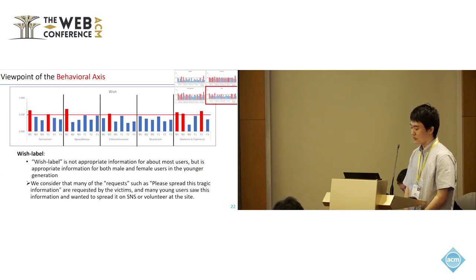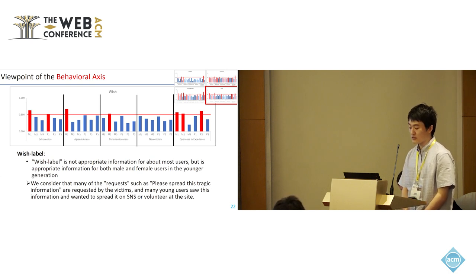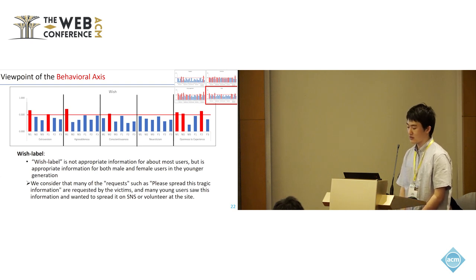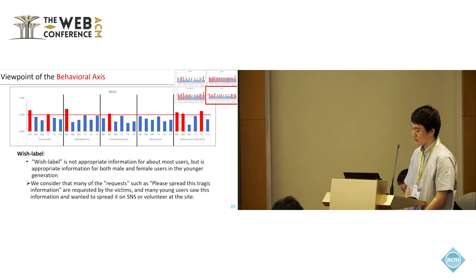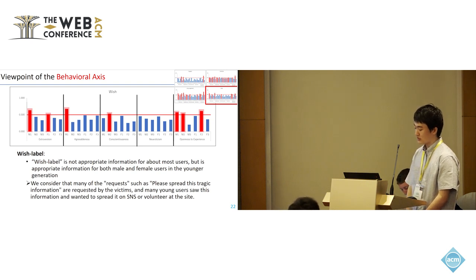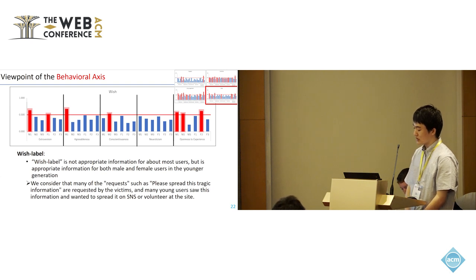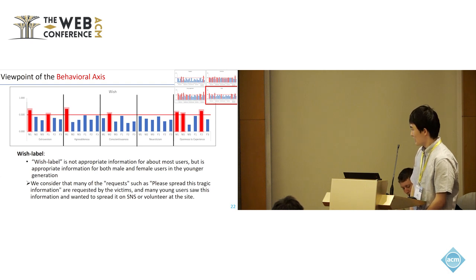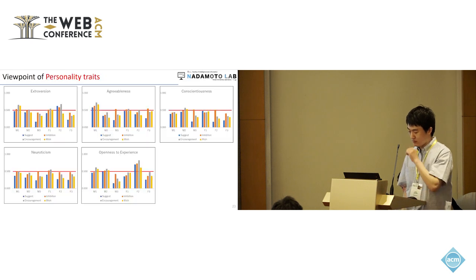Finally, I will talk about the result of the wish level. From this result, wish level is not appropriate information for most users, but is appropriate information for both male and female users in the younger generation. We consider that many of the requests such as 'please spread this tragic information' are made by victims, and many young users see this information and want to spread it on SNS or volunteer at the site.